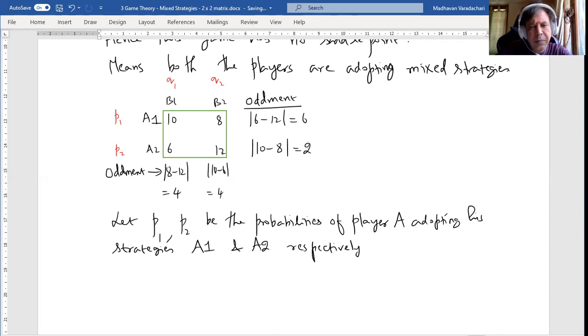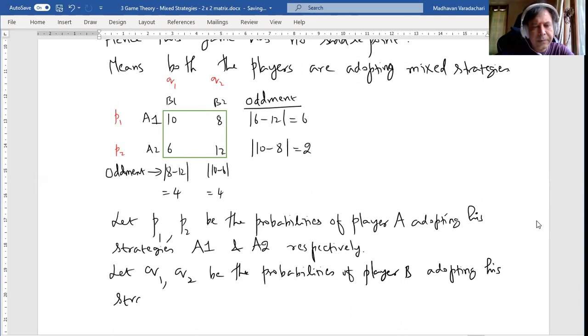Similarly, let Q1, Q2 be the probabilities of player B adopting his strategies B1 and B2 respectively. Now our objective is to find out what are the values of P1 and P2. How do we do it?